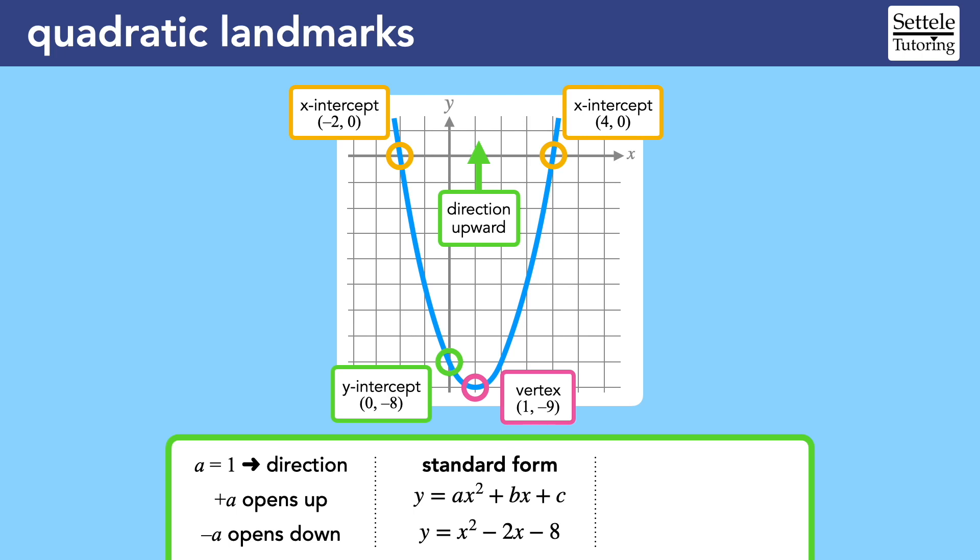In this case, there is no number in front of the x-squared term, which means that a is equal to positive 1. This is very common, and it would tell us that this parabola opens upward. The b is negative 2, but that doesn't tell us anything specific about the shape of the parabola. On the other hand, the c immediately tells us the y-intercept. We can see that the negative 8 in the equation matches the negative 8 y-intercept on the graph.